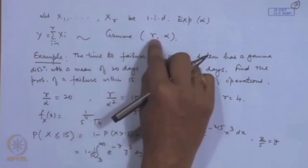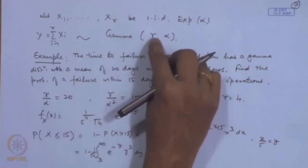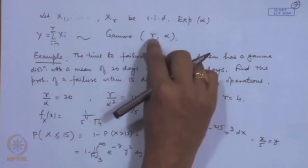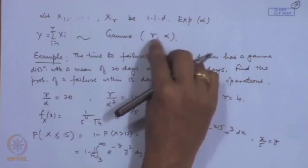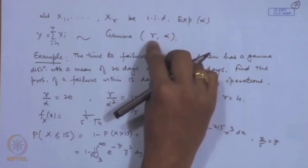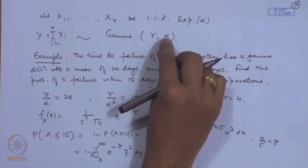This also implies the additive property: if X₁ ~ Gamma(r₁, α) and X₂ ~ Gamma(r₂, α) are independent, then X₁ + X₂ ~ Gamma(r₁+r₂, α). Now we proceed to another important distribution — the normal distribution.